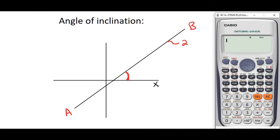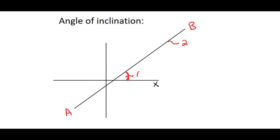So if this gradient is 2, then what you would do is you would say shift tan of 2. And that would be 63.43 degrees. So what that means is that this angle is 63.43 degrees.